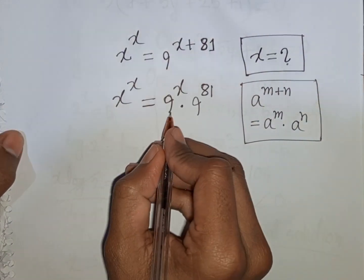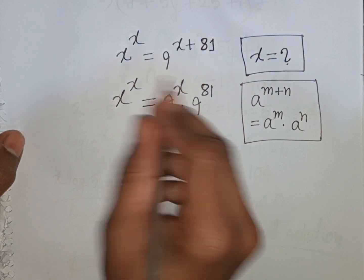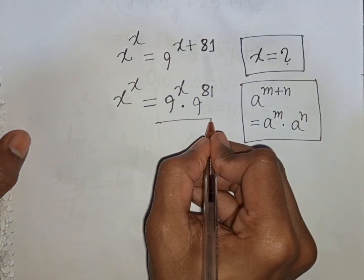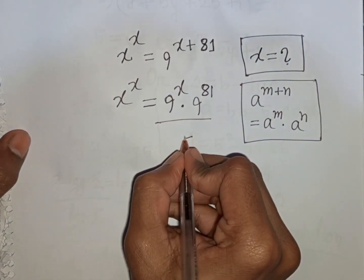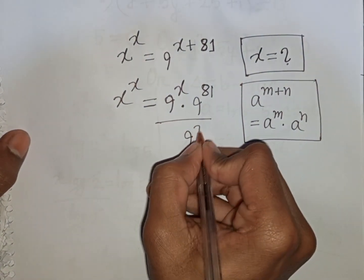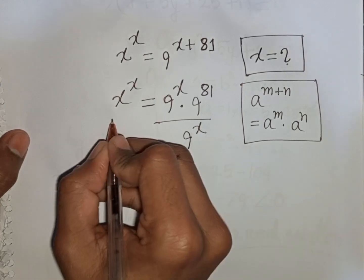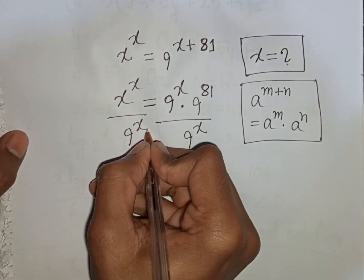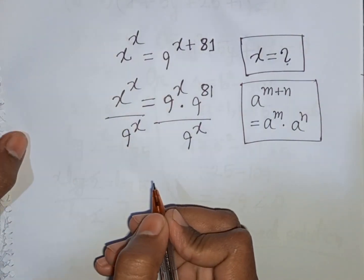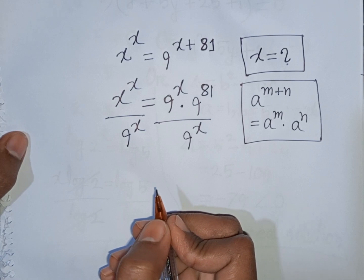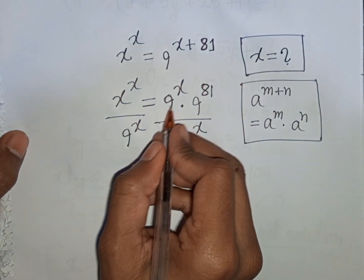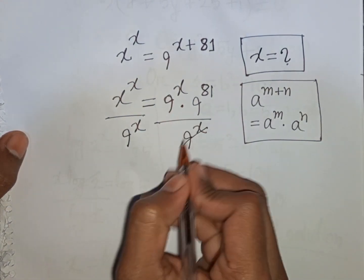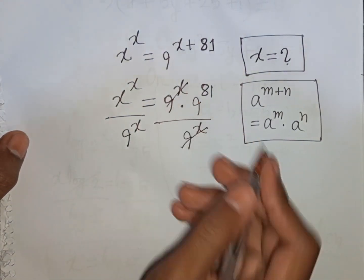Now we divide both sides by 9^x. Divided by 9^x on both sides. We see this 9^x — this 9^x will be cancelled.